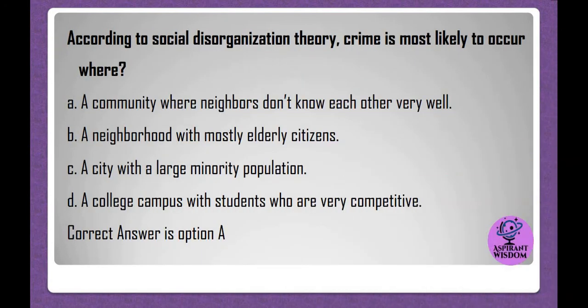According to social disorganization theory, crime is most likely to occur where? A. A community where neighbors don't know each other very well. B. A neighborhood with mostly elderly citizens. C. A city with a large minority population. D. A college campus with students who are very competitive. Correct answer is option A.